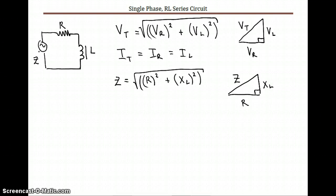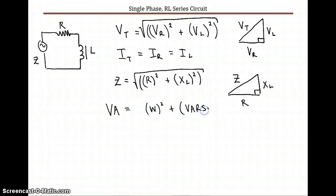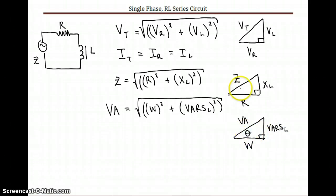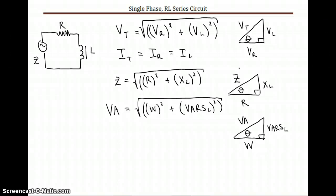Now for power — VA is the total power for this circuit. Again, it's a right-angle triangle: VA = √(W² + VARsL²). Watts is the resistive value (adjacent), and VARs subscript L is for the coil (opposite). All three triangles — voltage, impedance, and power — have the exact same angle and ratios. VARs L is the potential energy held in the magnetic field of the coil; it doesn't give off heat, but it is a form of power.